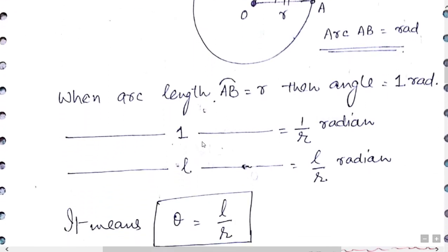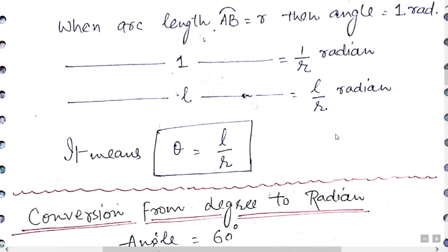Applying the unitary method: if arc length is 1 unit, the angle is 1/r. If the length is l, then the angle is l/r. This means θ = l/r for any length of arc.